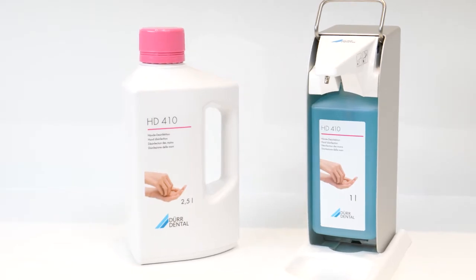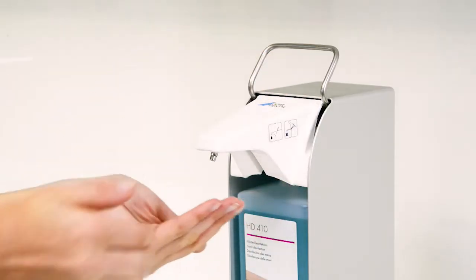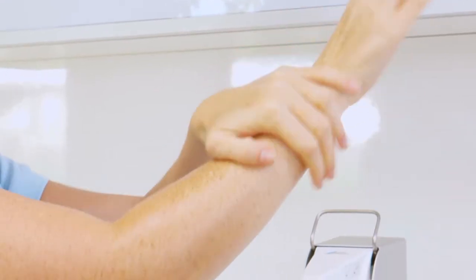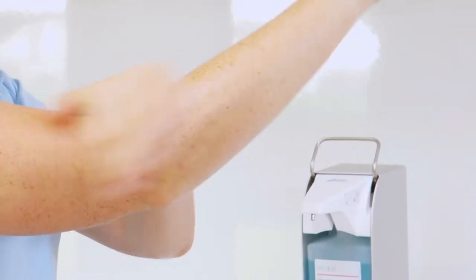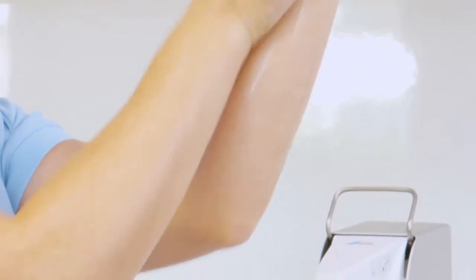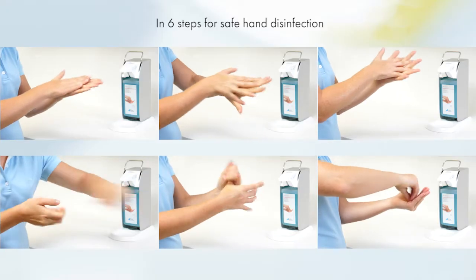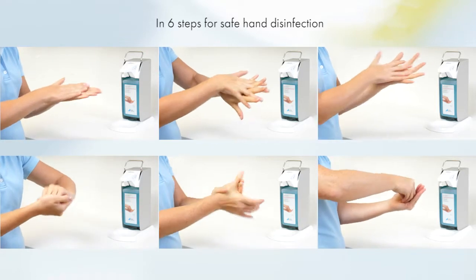Longer exposure times must be adhered to for surgical hand disinfection. You must rub your hands and lower arms up to your elbows with an adequate amount of disinfectant. Hold your hands above elbow level throughout the entire rubbing procedure. Proceed as described in the previous 6 steps.